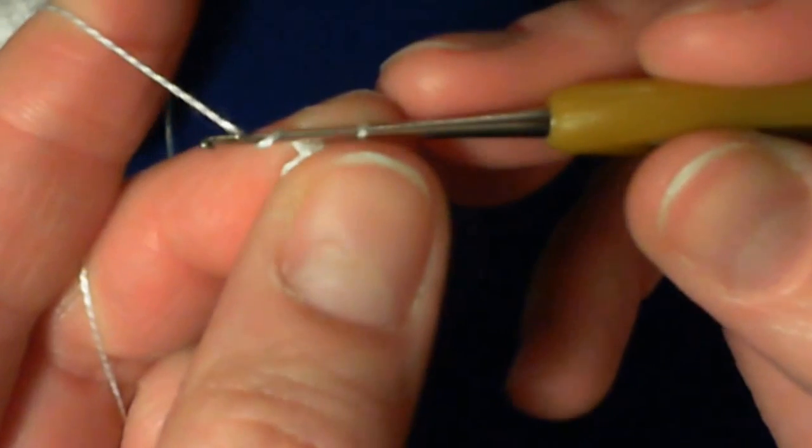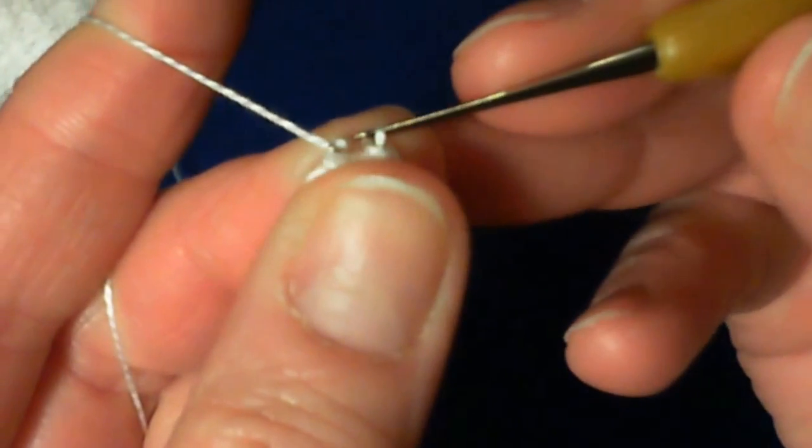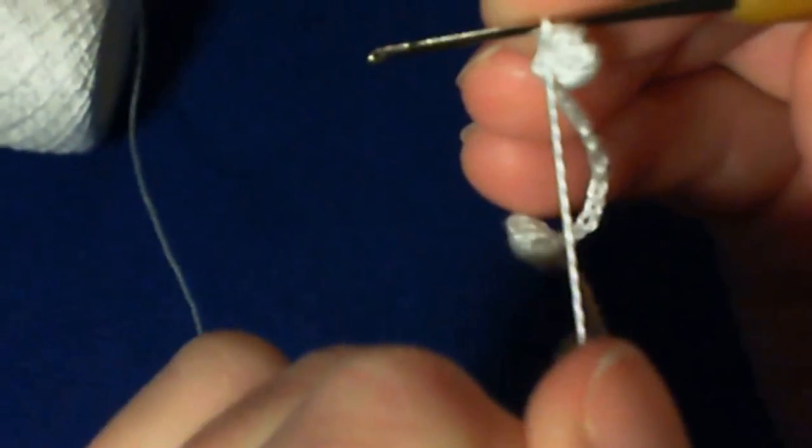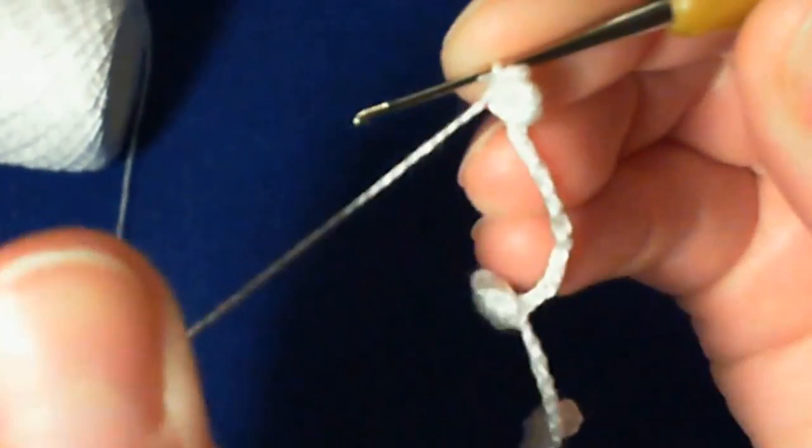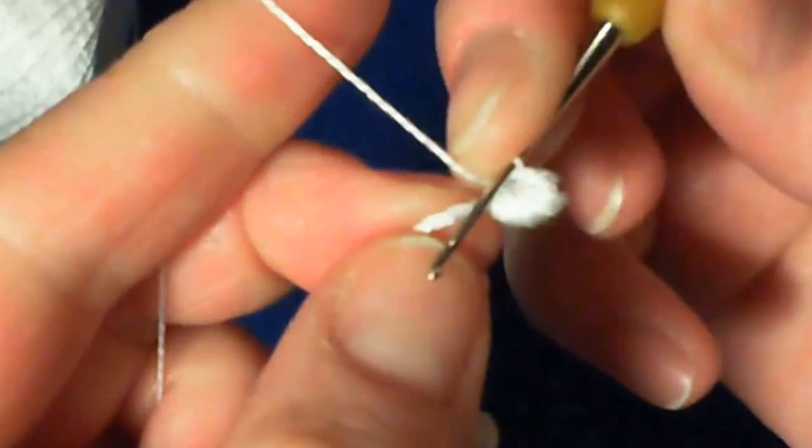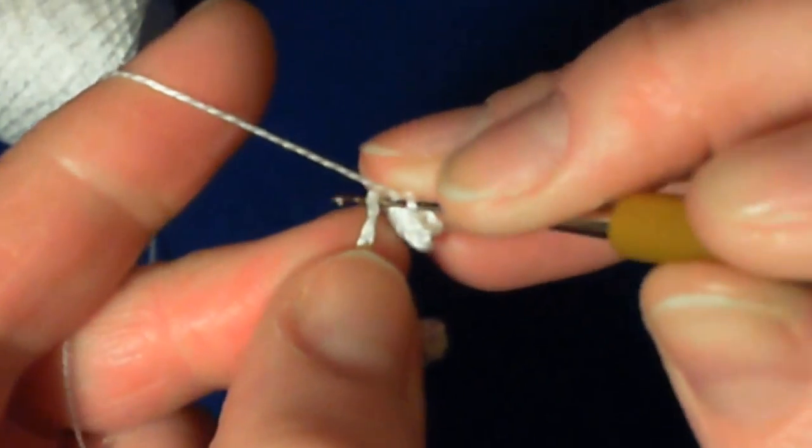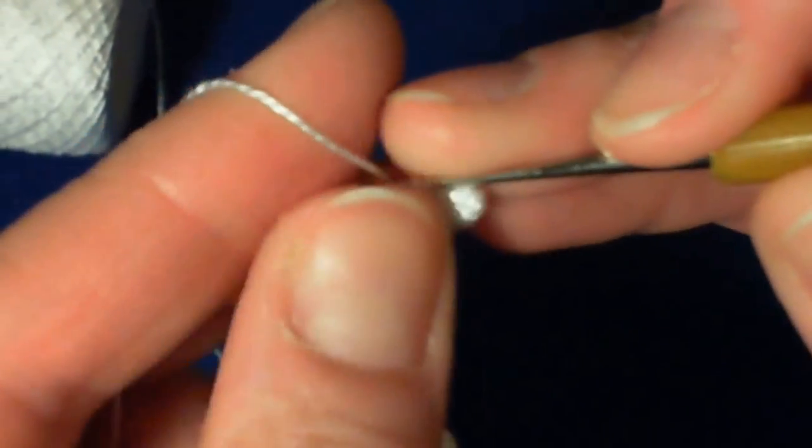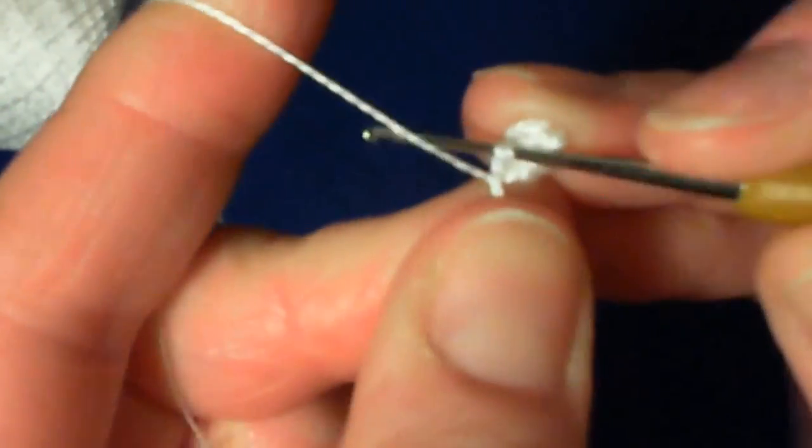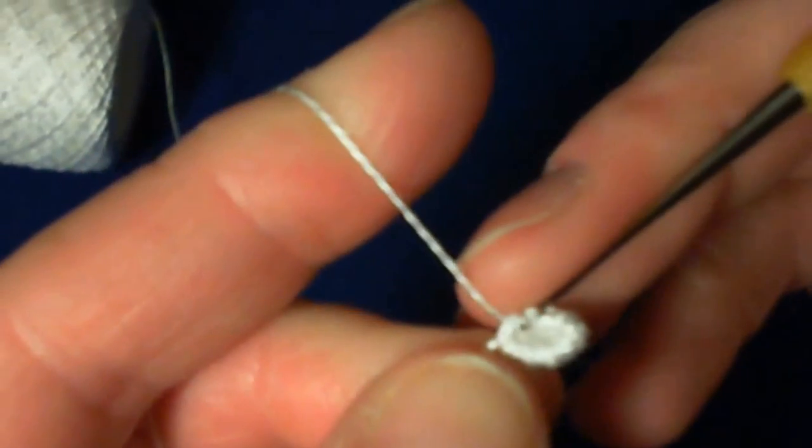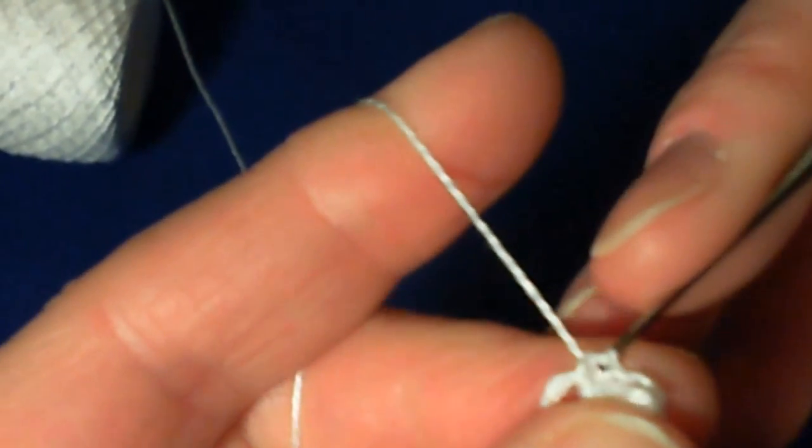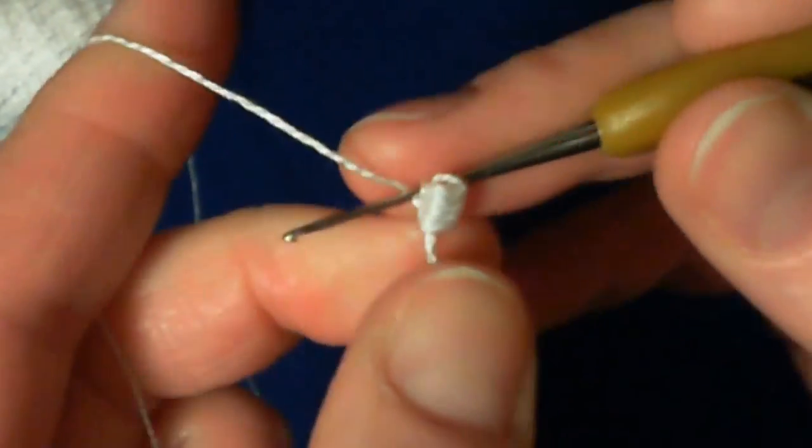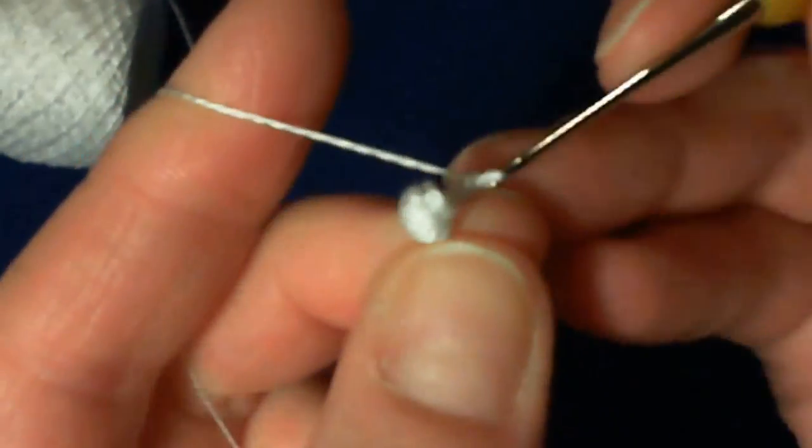Again, now we have to secure our clone stitch. Grab the thread, pull it through the stitch. Pull on the thread a little bit. The hook under the chain. Grab the thread and bring it out. And crochet 2 stitches on the hook. And you're ready to crochet the next one.